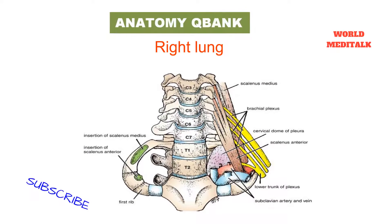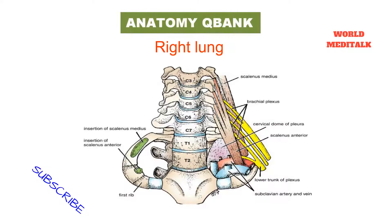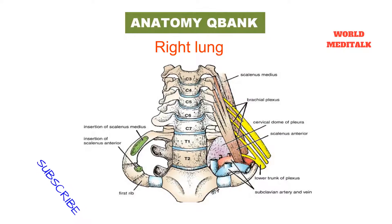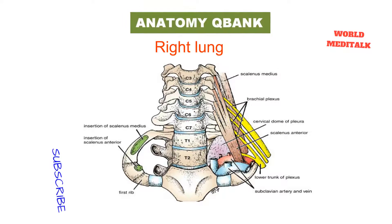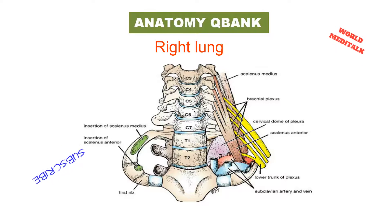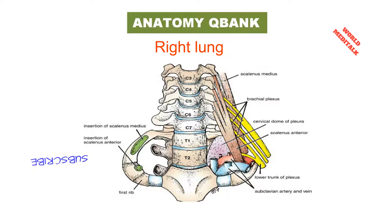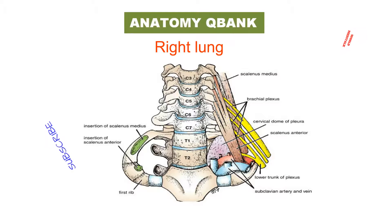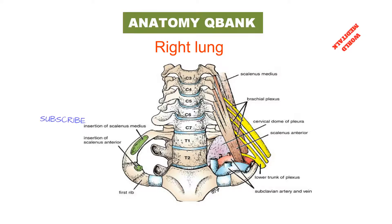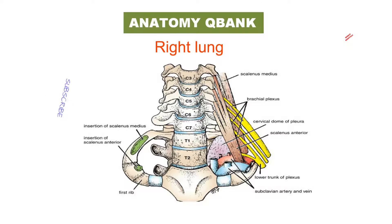Behind the hilum and the attachment of the pulmonary ligament is a vertical groove for the esophagus. In front and to the right of the lower part of the esophageal groove is a deep concavity for the extrapericardiac portion of the inferior vena cava. The root of the right lung lies behind the superior vena cava and the right atrium, and below the azygous vein.